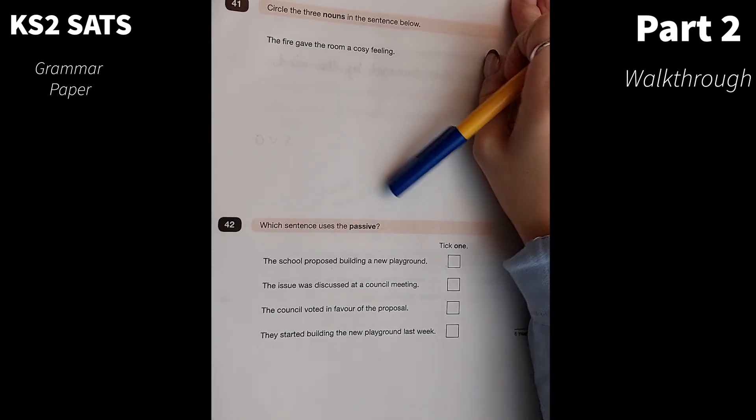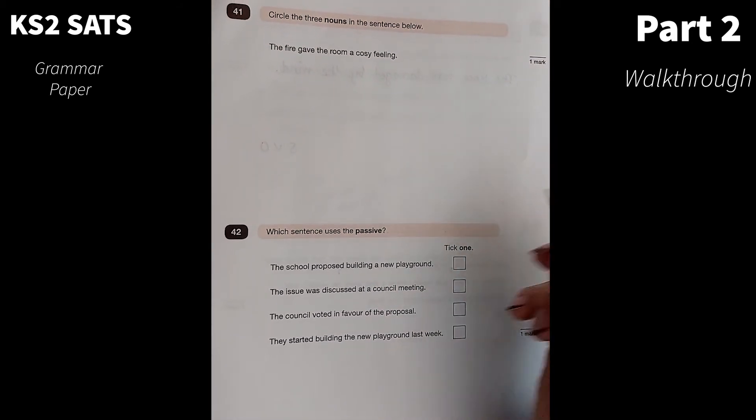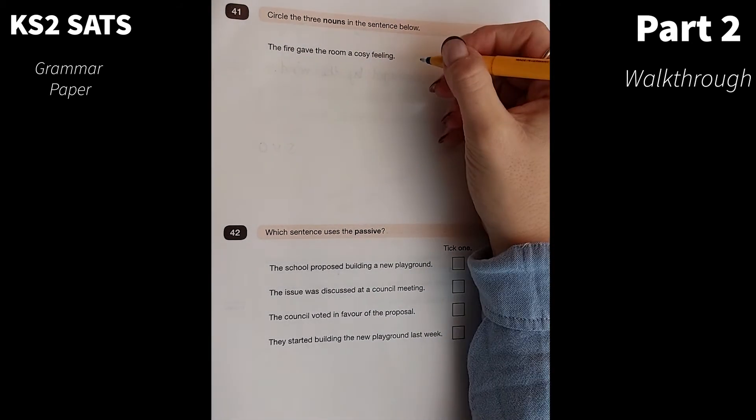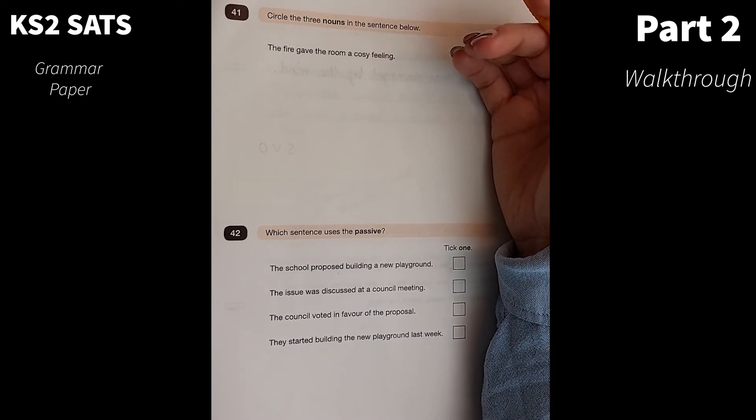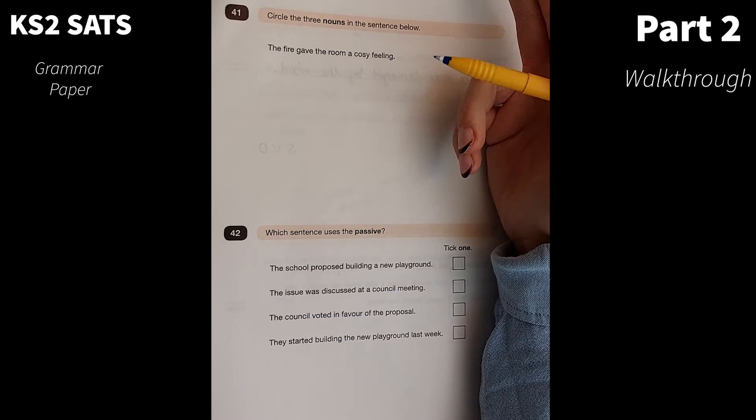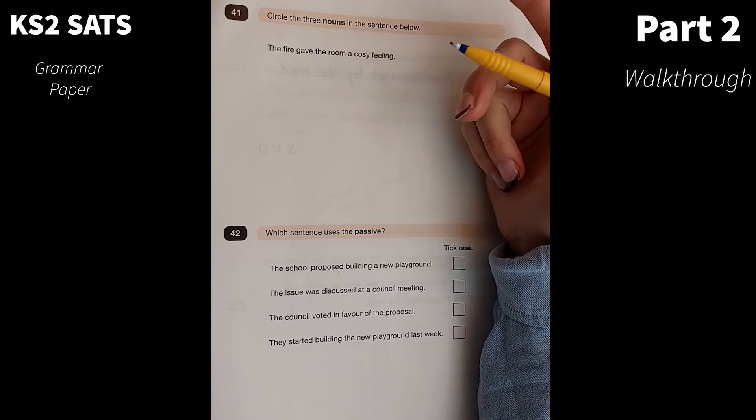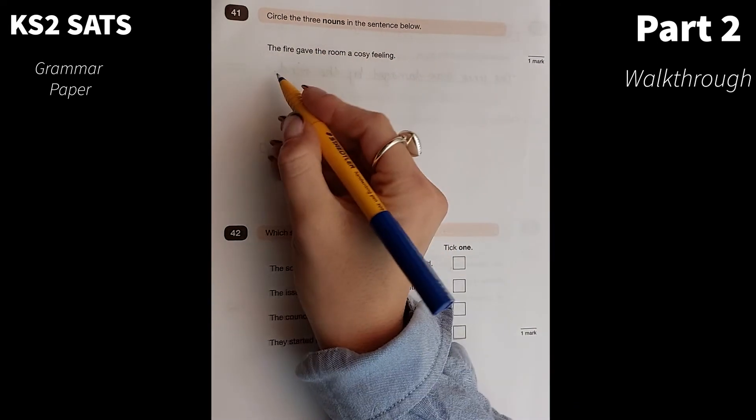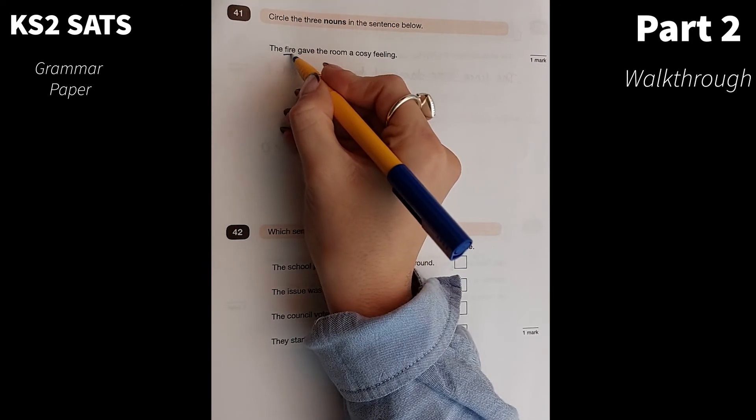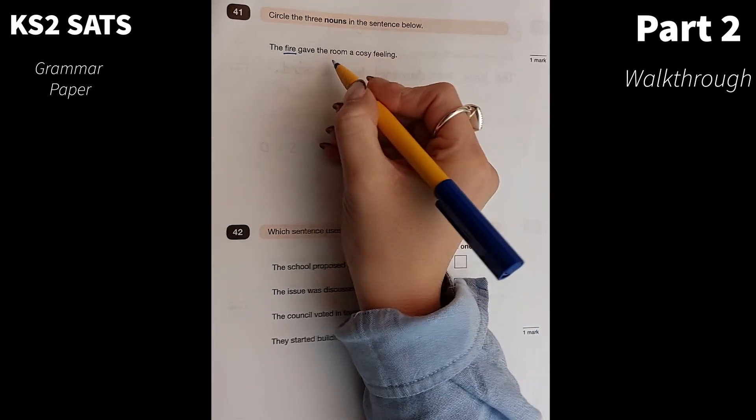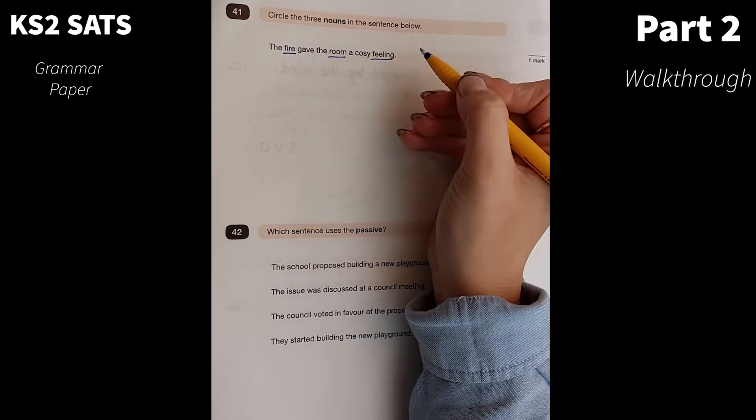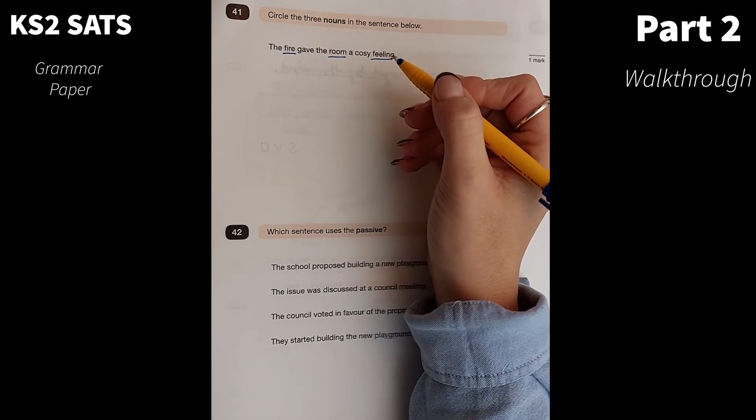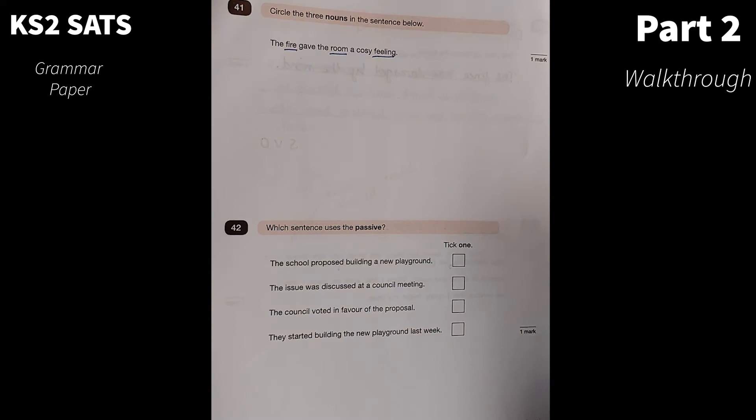Circle the three nouns in the sentence below. We have our concrete nouns, we have abstract nouns, we have collective nouns. In this situation, we've got two common nouns and one abstract noun. The fire gave the room a cosy feeling. Well, fire is our noun, the room is our noun, and feeling is also a noun. It's been described as being cosy.